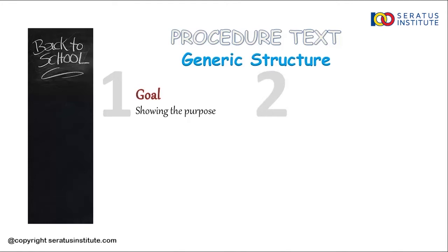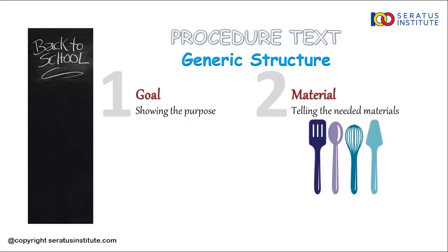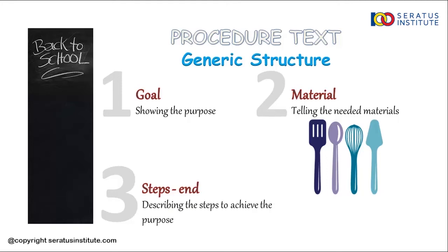Number two is material — it is telling you the needed materials. Bahan-bahan atau alat-alat yang akan digunakan selama proses. Number three is steps, or the end of the generic structure. It is describing the steps to achieve the purpose. Jadi, disini penulis menuliskan langkah-langkahnya bagaimana membuat atau menggunakan sesuatu. Gampang kan Sobat Seratus?